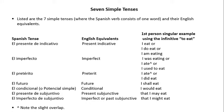Next is el condicional o potencial simple — in English, the conditional tense. The example is: I would eat. Next is el presente de subjuntivo. The English equivalent is the present subjunctive. The example is: that I may eat. Next is el imperfecto de subjuntivo. The English equivalent is the imperfect or past subjunctive. And the example is: that I might eat.